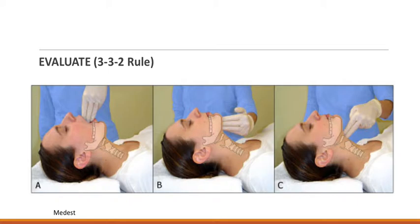We can also evaluate for a difficult airway with the 3-3-2 rule. We should check if 3 fingers can fit between the incisors of the patient's mouth, if 3 fingers fit between the chin and the hyoid bone, or if 2 fingers fit between the hyoid bone and the cricoid cartilage. If any of these parameters don't fit, this is also a predictor of a hard intubation.